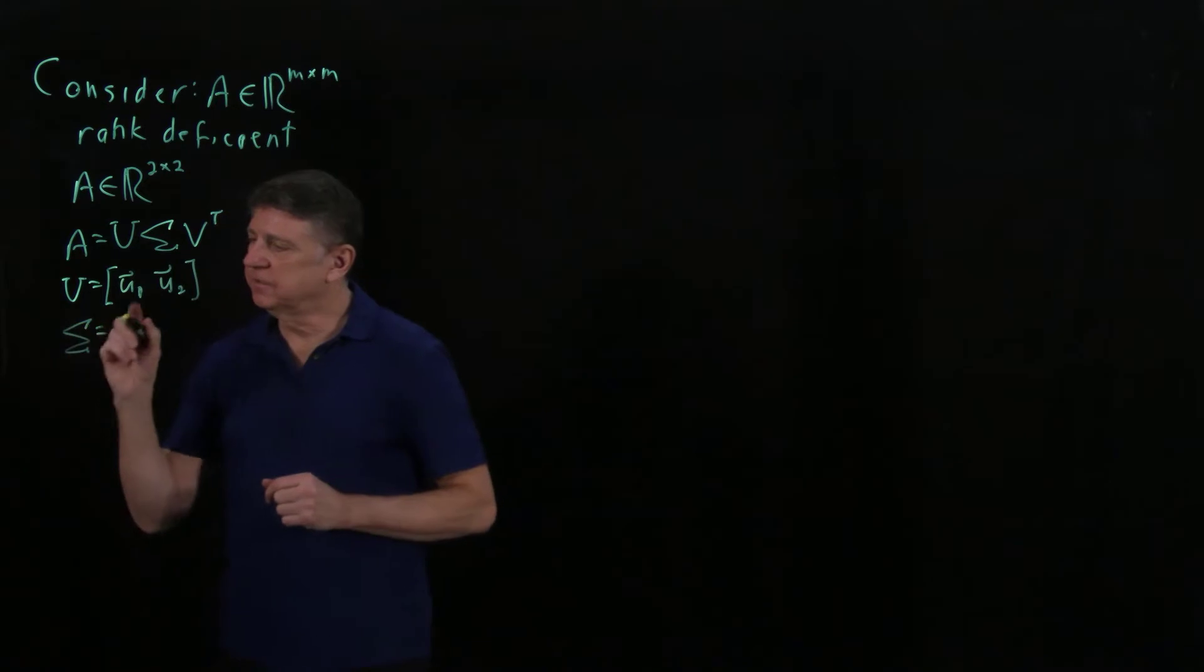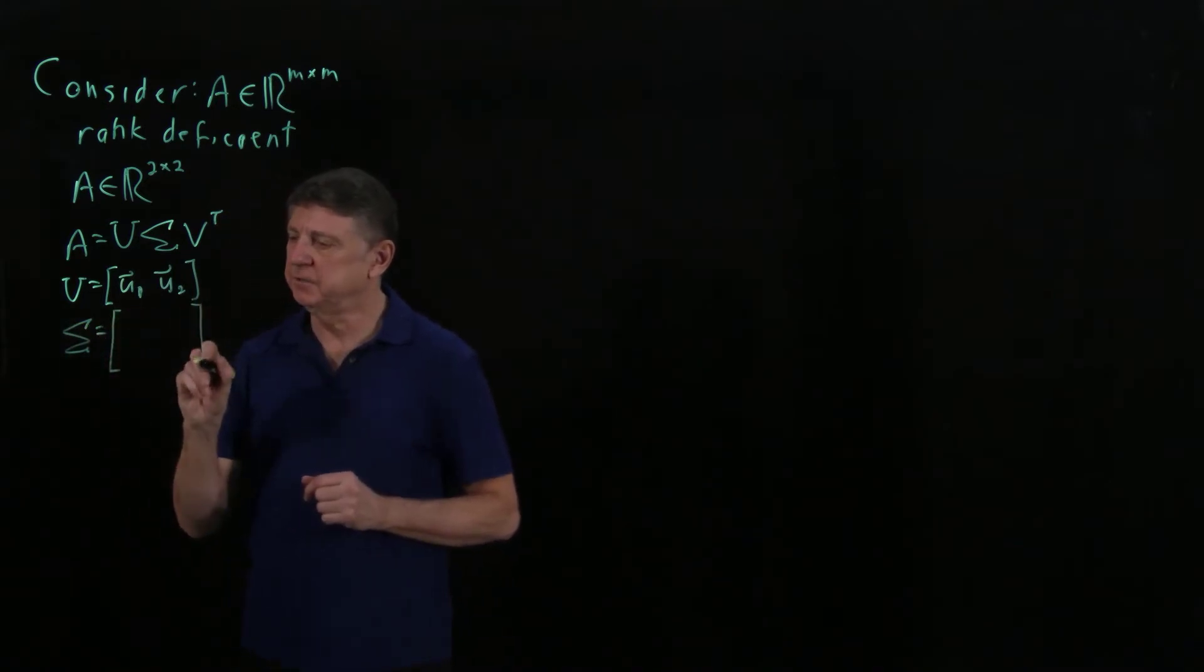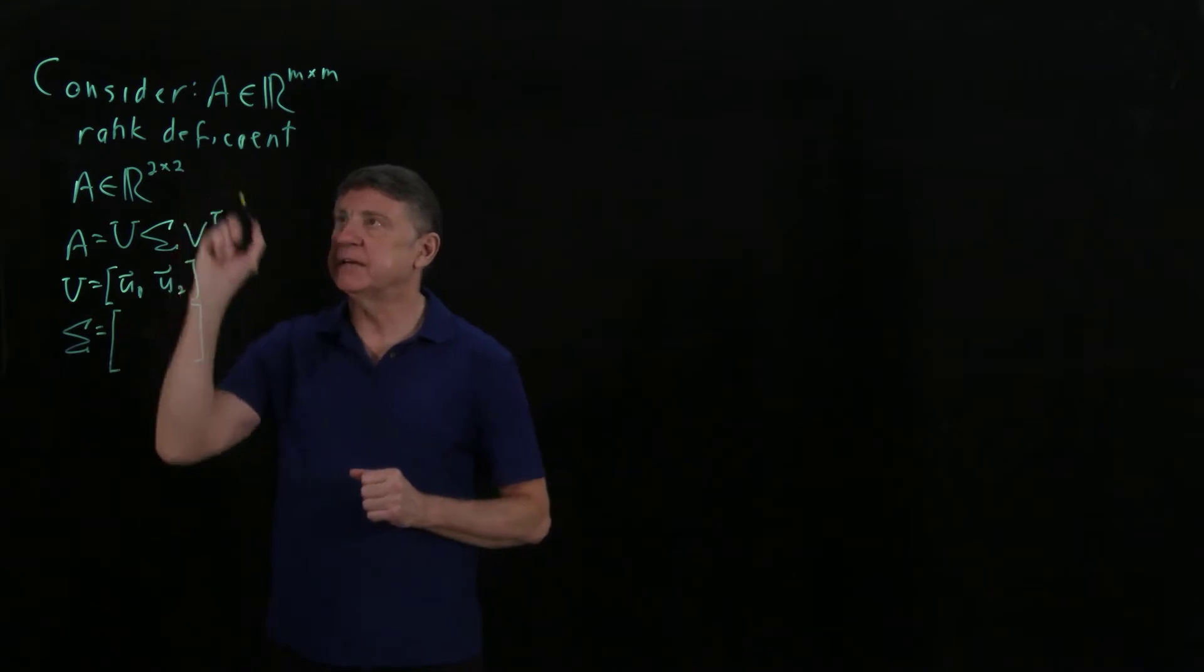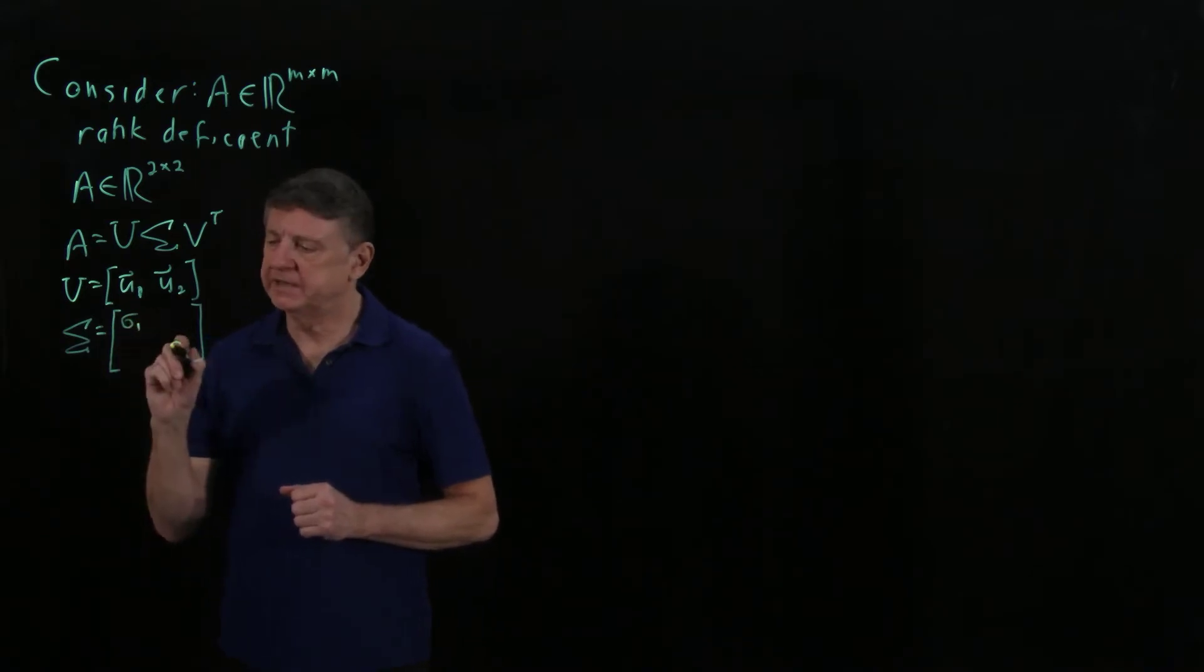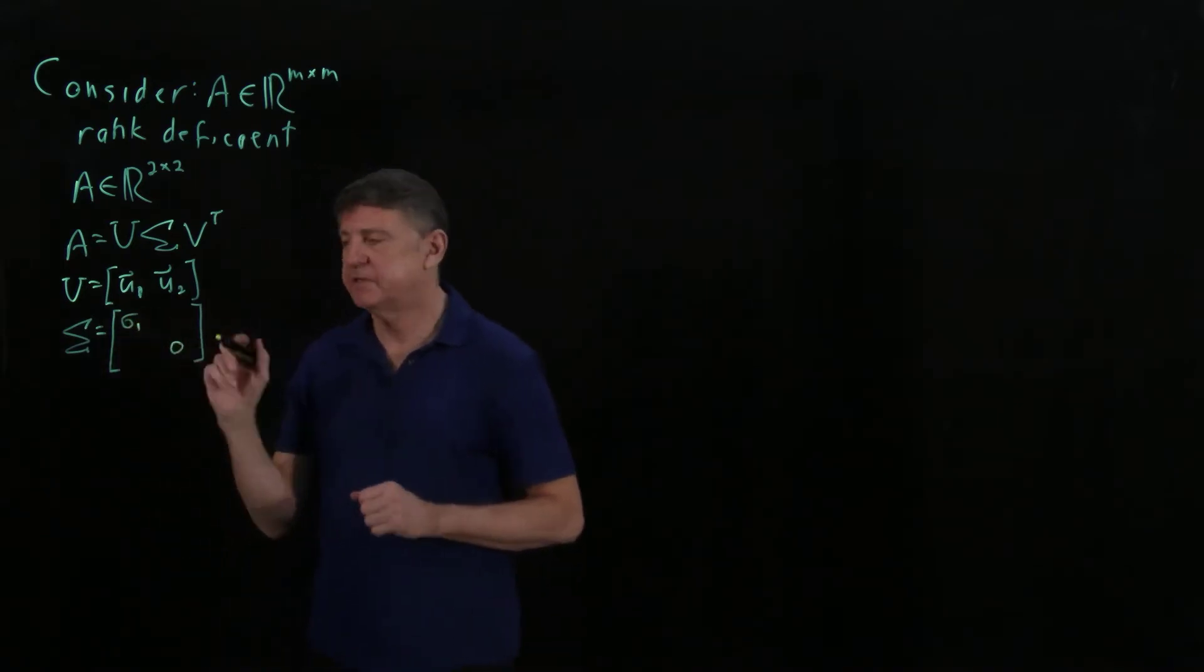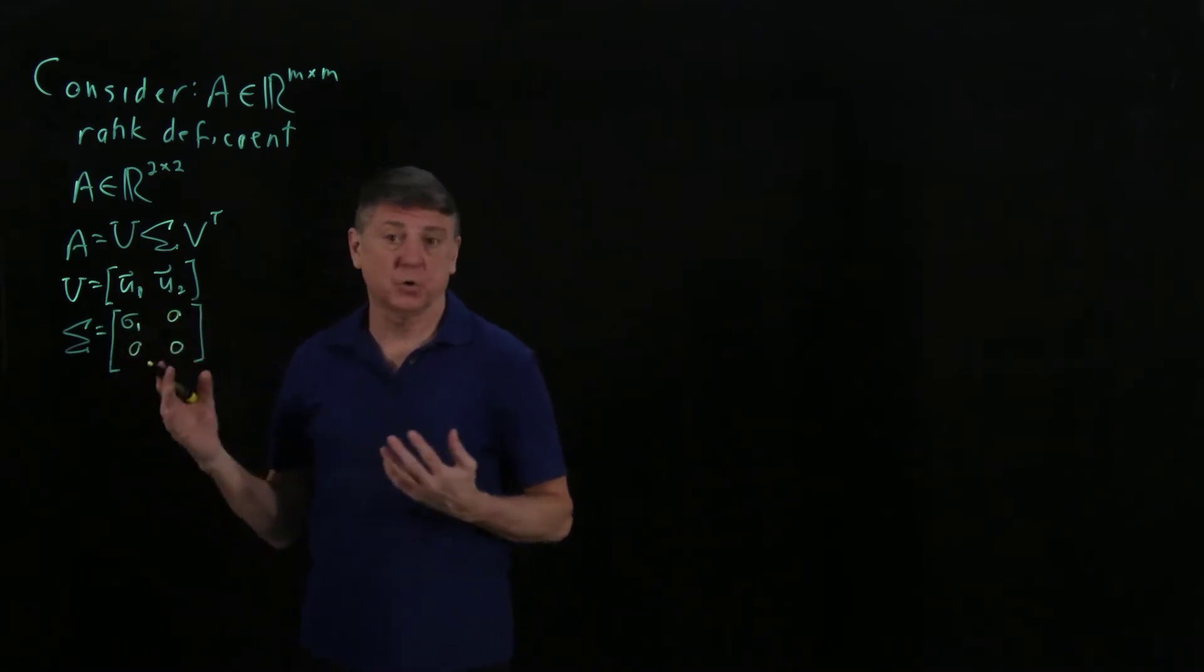The singular value matrix, because A is 2 by 2, this is a 2 by 2, and we said it's rank deficient. Let's suppose that the first singular value is some sigma 1, and that the second one is 0, and that makes it rank deficient. And the off diagonals are always 0.